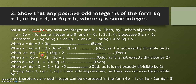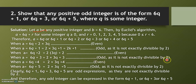6q + 3: the first part 6q is even but 3 is odd, so the result is odd as it is not exactly divisible by 2. Similarly, 6q + 4 is even and 6q + 5 is odd. So 6q + 1, 6q + 3, and 6q + 5 are the odd expressions, as they are not exactly divisible by 2.